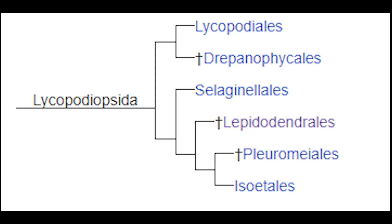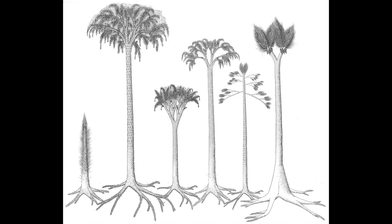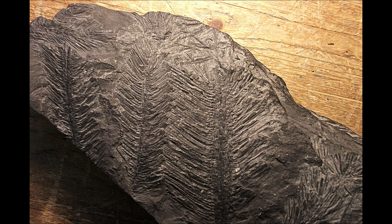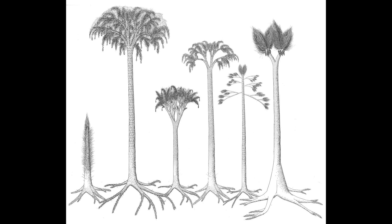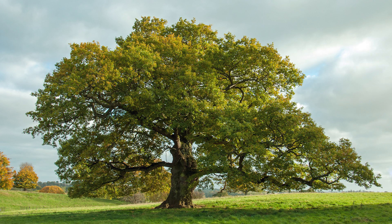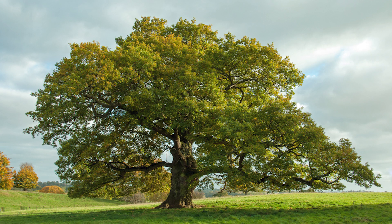Ancient lycophytes in the order Lepidodendrales had tree-like forms growing hundreds of feet tall with scaly trunks, branches, root systems, and fern-like leaves. These trees were present in the Carboniferous period and persisted until the Permian, eventually being outcompeted by the previously mentioned tree ferns. Arborescent lycophytes were responsible for the large majority of plant biomass in the Carboniferous, accounting for 70% of all plant material in certain biomes. Lepidodendrales are most closely related to club mosses and quillworts — speaking to how remarkably ancient lycophytes were compared to their unassuming modern relatives.